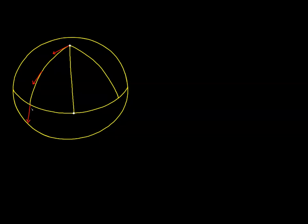Now it's at right angles to the equator, and as we transport along that line — which is also a geodesic — it will remain at right angles all the way over to the second point. So it's going to continue to point in this downward direction all the way over to our target point.